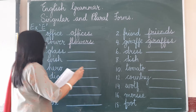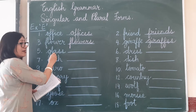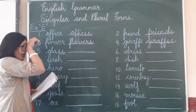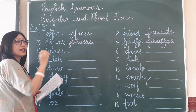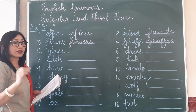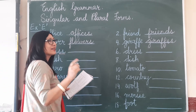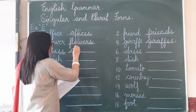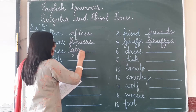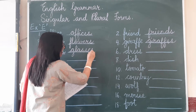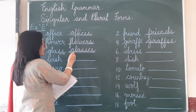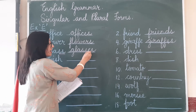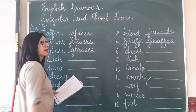One glass. Now this noun is ending in a hissing sound, so add E-S. So one glass, many glasses — G-L-A-S-S, glass, add E-S: glasses.